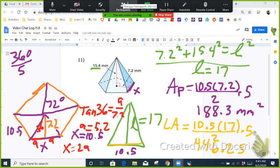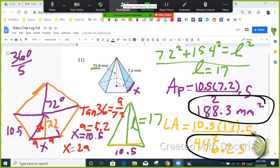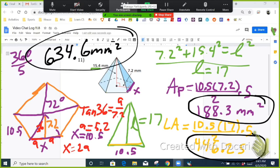So our final answer, we're just going to add the pentagon and the lateral area, and that will give us the surface area. And we should get around 634.6 square millimeters for the surface area.